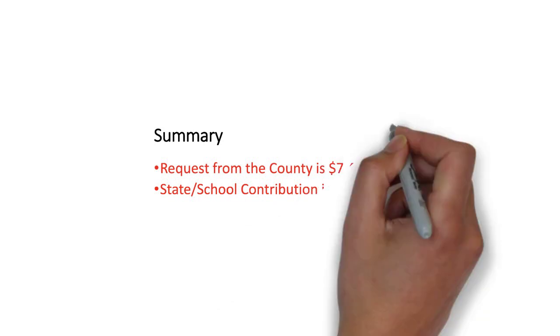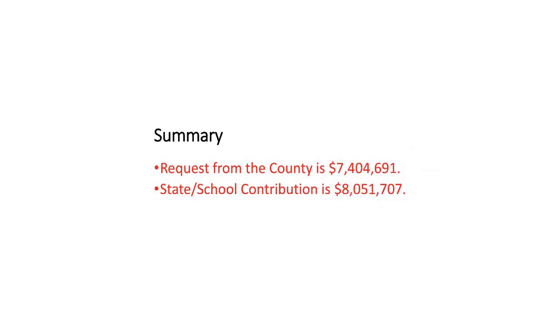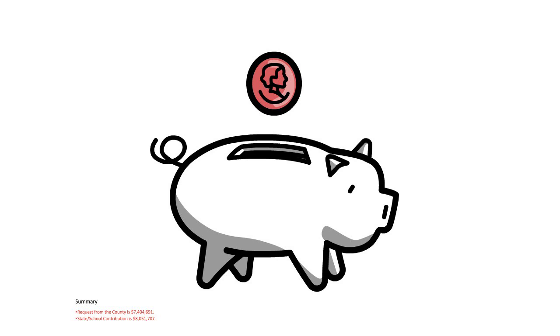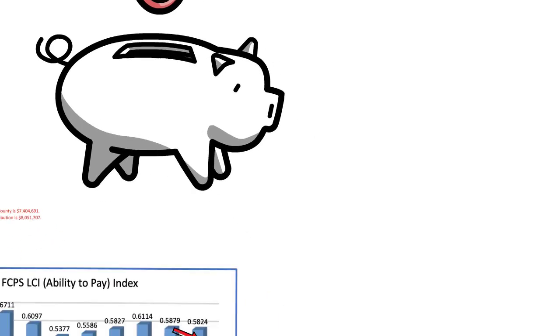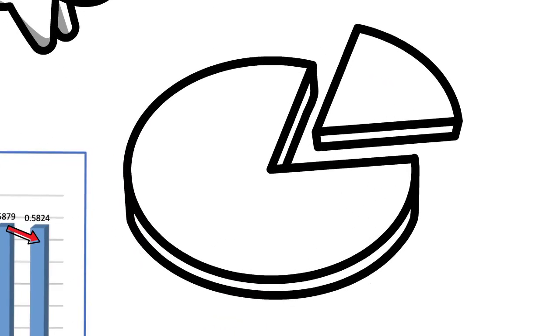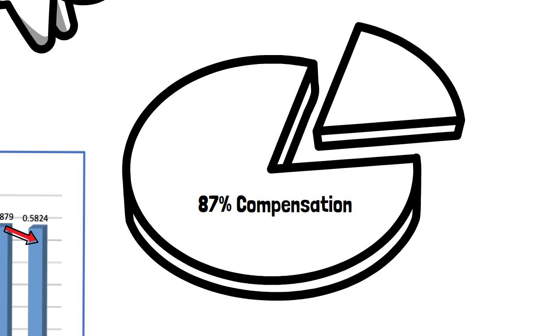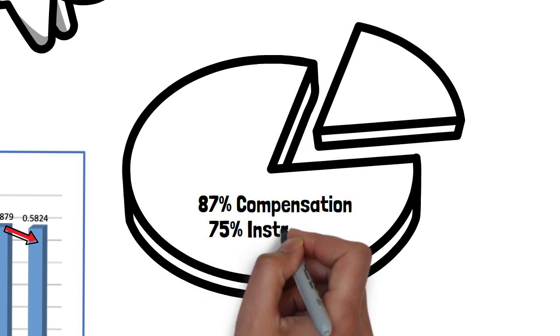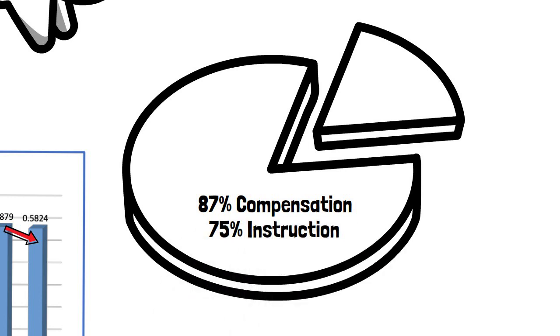Certainly, fixing compression and addressing compensation comes with a cost. Our ask is $7.4 million from the county, and our contribution is $8 million. We believe this is so important that we are taking every dollar, not tied to something else, and applying it to compensation. In fact, 87% of the budget goes to compensation, and 75% of total expenditures go to instruction.